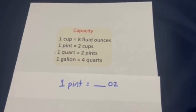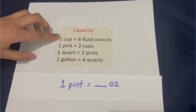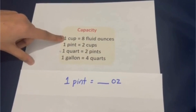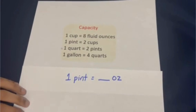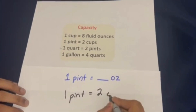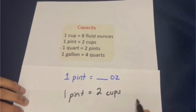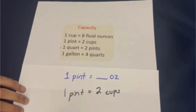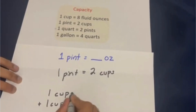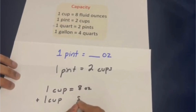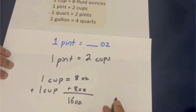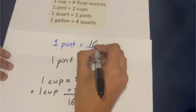We're going to convert one pint into ounces. As you can see right here, we have the capacity measurements. One pint is two cups, and we also know that one cup is eight ounces. So one pint is equal to two cups — it's like one cup plus one cup. And each cup is equal to eight ounces, so it's eight ounces plus eight ounces, which is 16 ounces. Meaning that one pint is equal to 16 ounces.